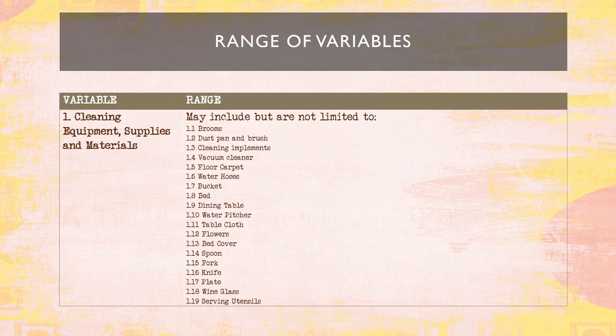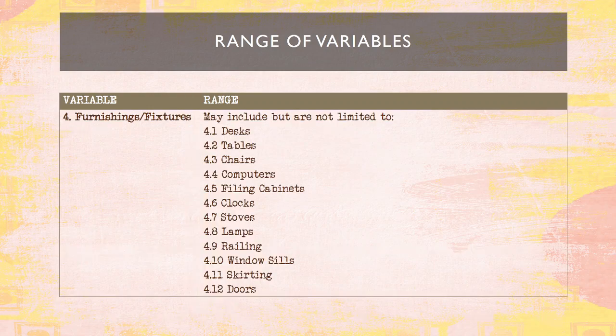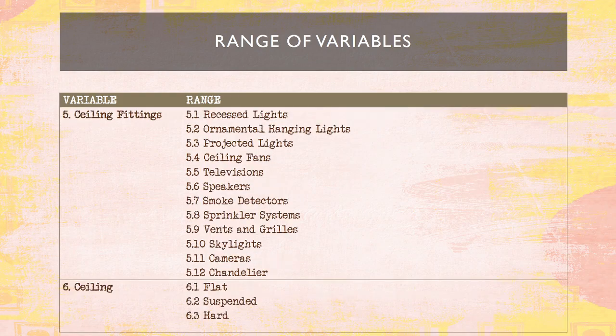The range of variables: number one, cleaning equipment, supplies, and materials — may include but are not limited to various cleaning items and equipment. Number two, floor type and surface textures — includes concrete and others — with different techniques and standards to follow for each floor type. We also have waste: wet and dry, including dust, paper, wood, stones, and labels. Furnishings and fixtures may include but are not limited to ceiling fittings, smoke detectors, mirror systems, and ceilings that can be flat, suspended, or hard. Bathroom supplies and accessories, sanitizing agents, sanitizing equipment, supplies, and materials are also included.